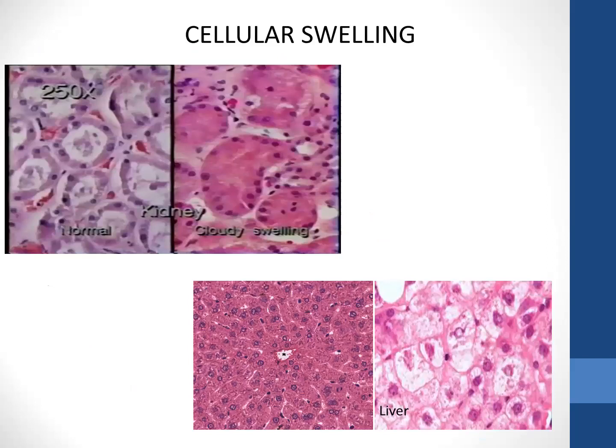In the first picture, the microscopic appearance of tubules of the kidney is shown, and eosinophilic staining of the cells can be seen as compared to normal tubular epithelial cells. The other picture shows hepatocytes with cellular swelling, where clear vacuoles or ballooning of the cells can be seen. So in both pictures there is cellular swelling — in the kidney showing eosinophilic staining, and in the hepatocytes showing clear vacuoles.